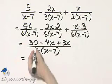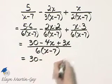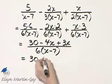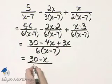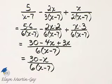And then let's see what we have. We have 30, minus 4x, plus 3x, that's minus 1x. I'll just leave it as minus x, over 6 times x minus 7.